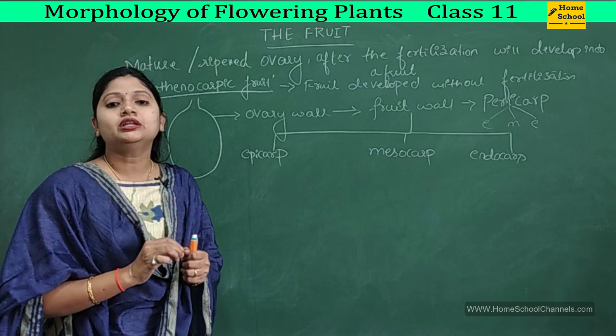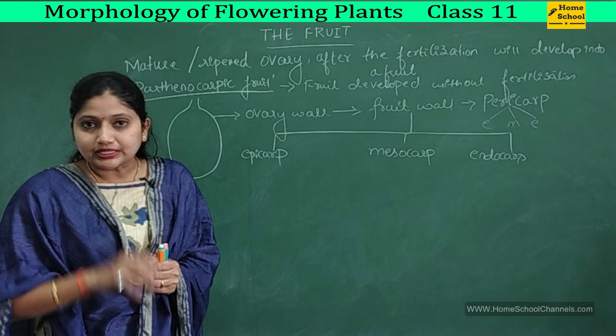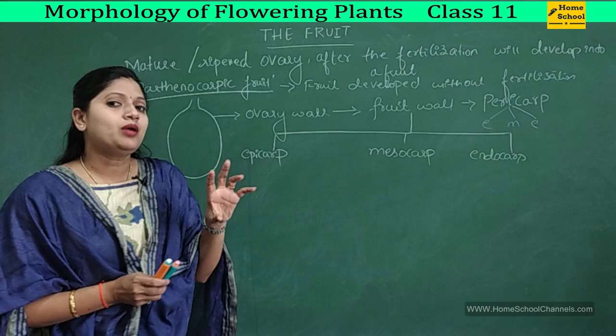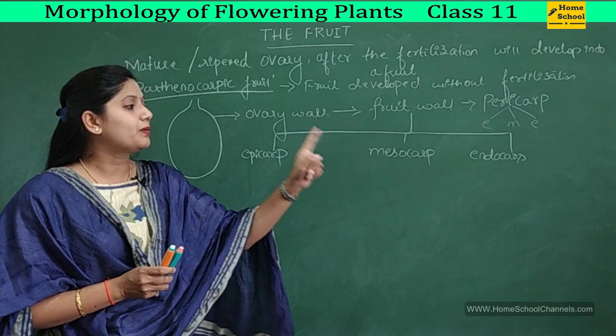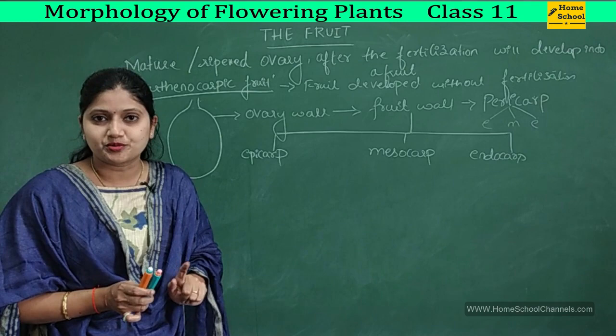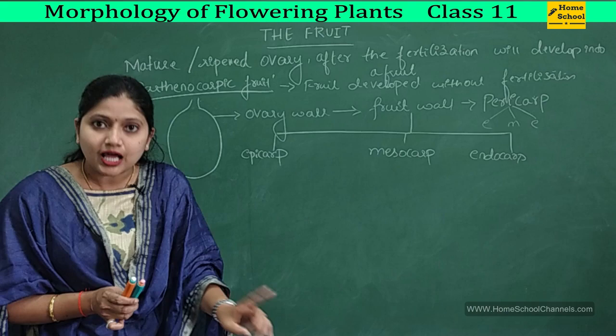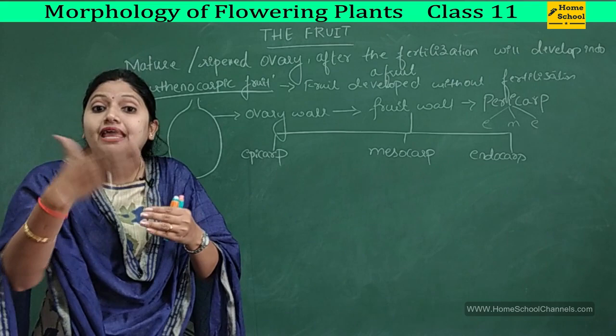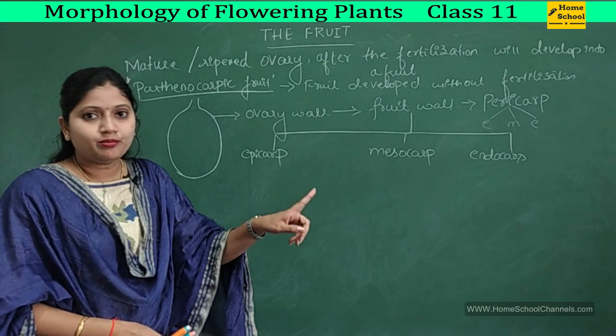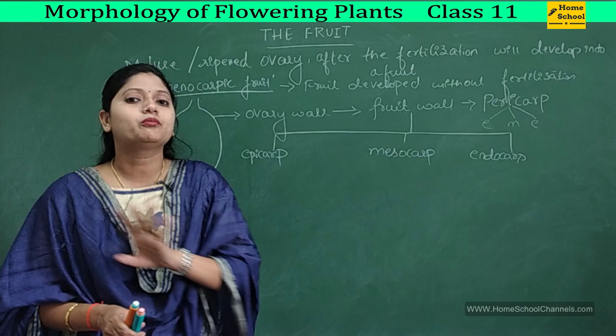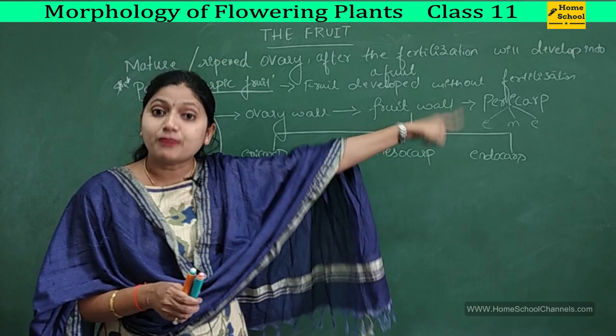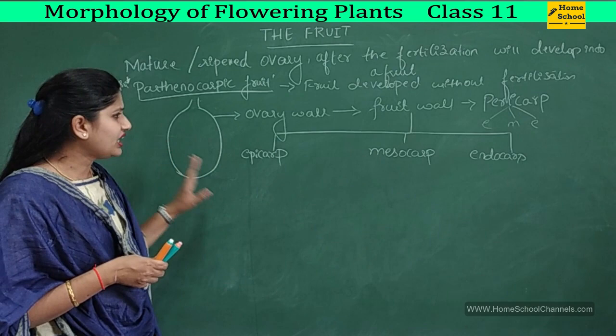In an exam, if they ask which is the fruit wall and give options like pericarp, epicarp, mesocarp, and endocarp, you should choose pericarp, because the fruit wall as a whole is pericarp. Epicarp, mesocarp, and endocarp are the three layers of the pericarp. Alone, none of them makes the fruit wall — it is the combination of all three, called pericarp, that is the fruit wall.